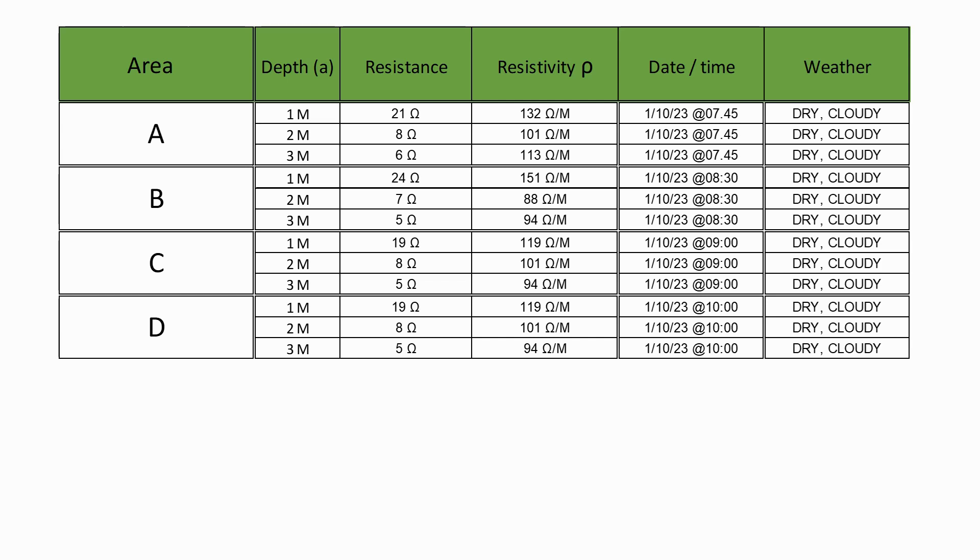We then take an average of the four readings at each of the depths. So to get the average soil resistivity value at a depth of 1 meter, we take the 1 meter readings measured at location A, B, C, and D, divide them by the number of readings which was 4, giving us an average at 1 meter of 130 ohm meters.